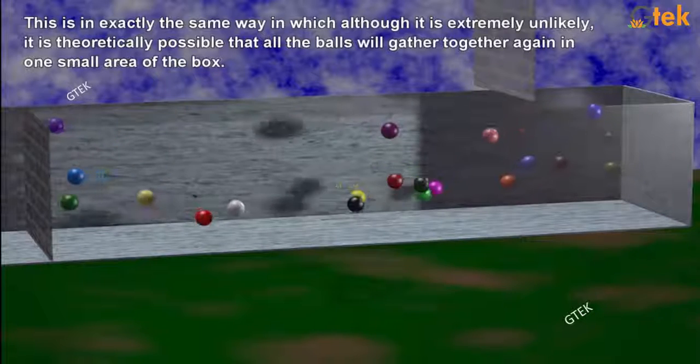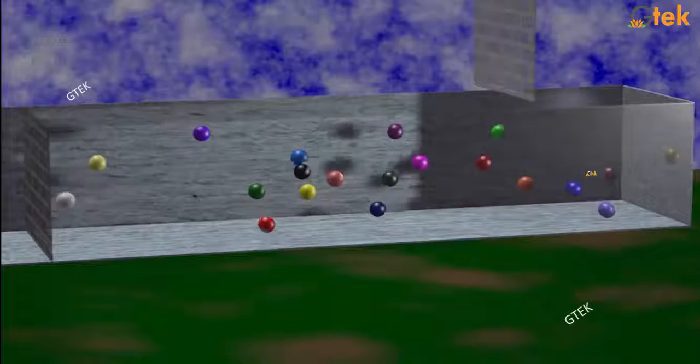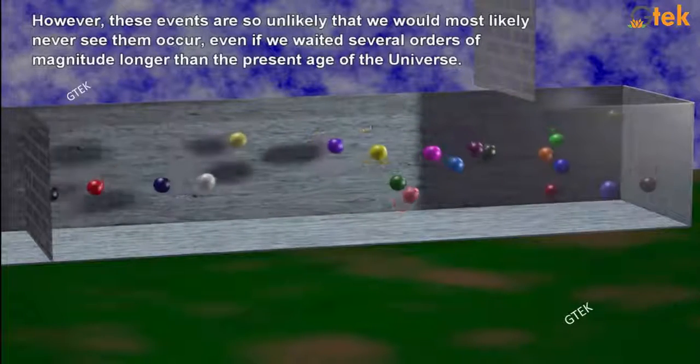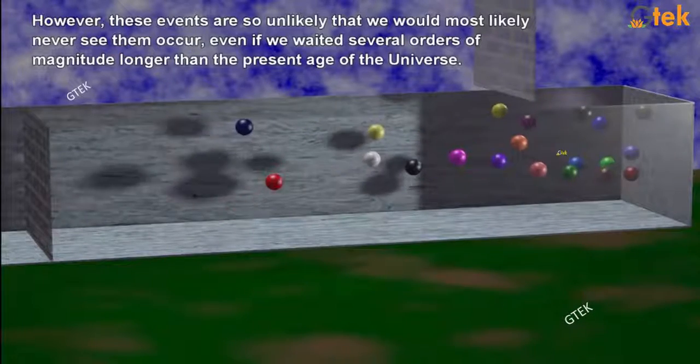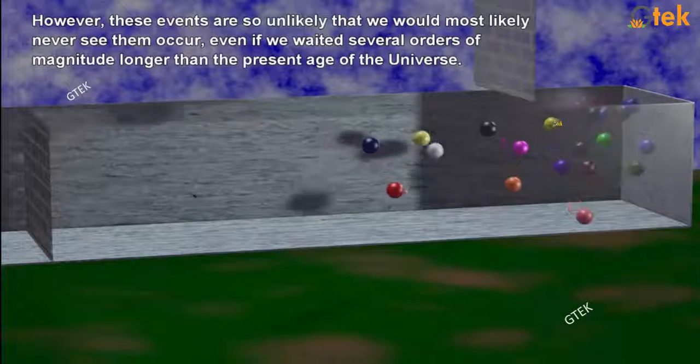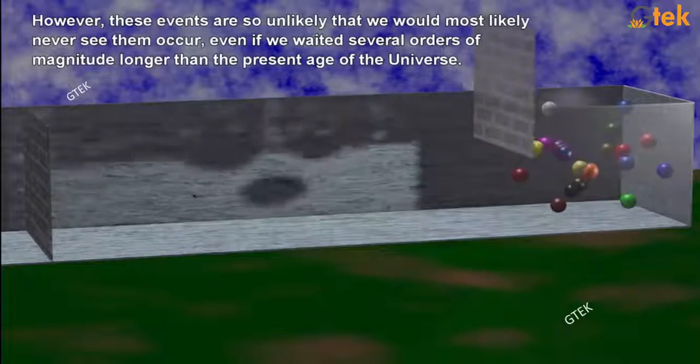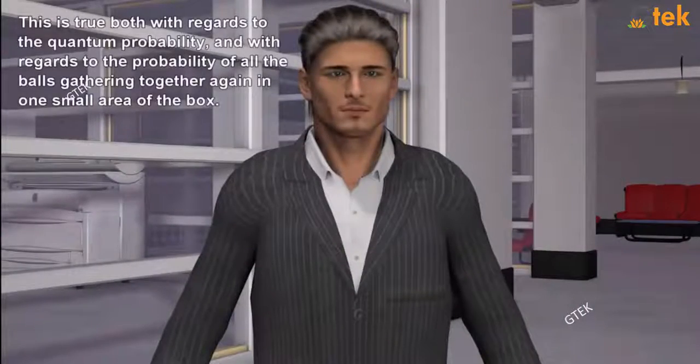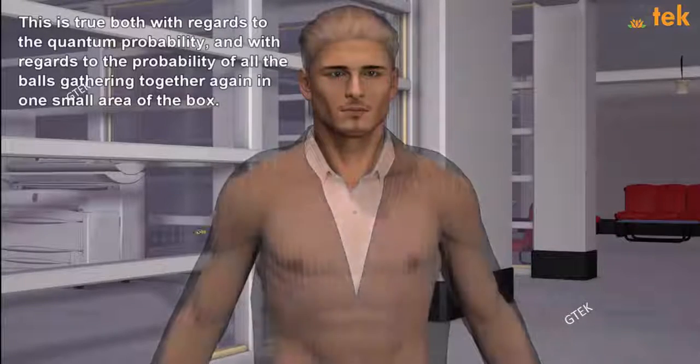This is exactly the same way in which, although it is extremely unlikely, it is theoretically possible that all the balls will gather together again in one small area of the box. However, these events are so unlikely that we would most likely never see them occur, even if we wait several orders of magnitude longer than the present age of the universe.